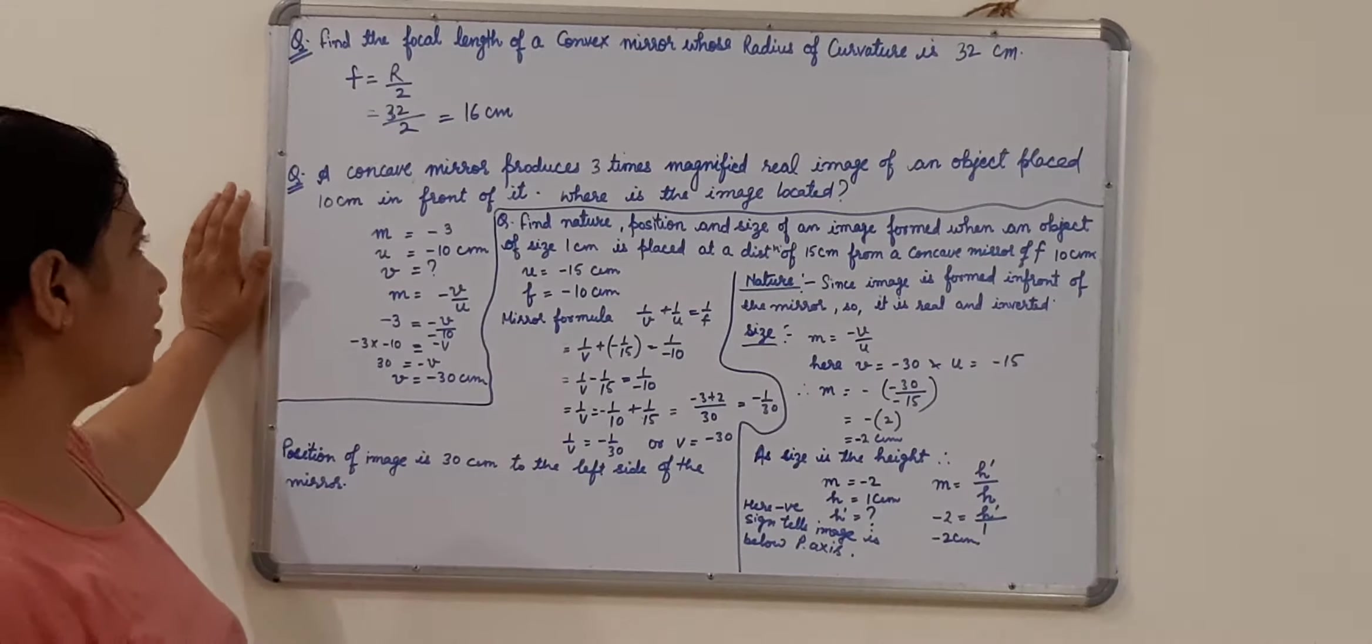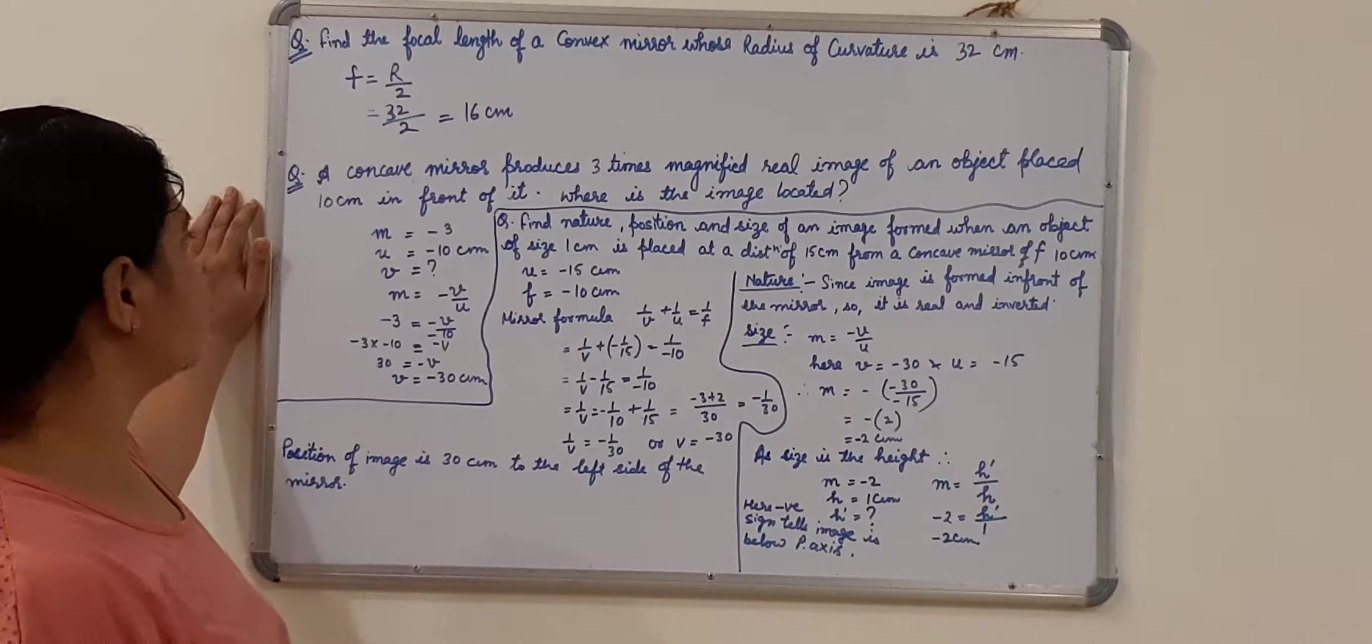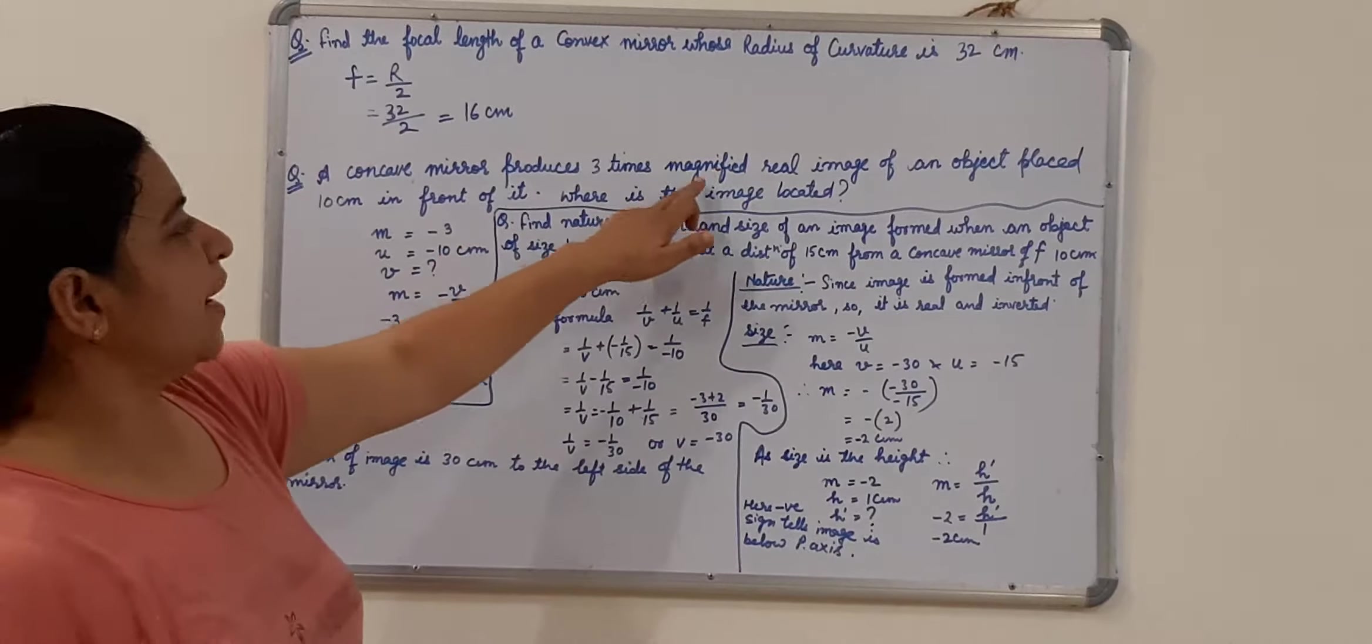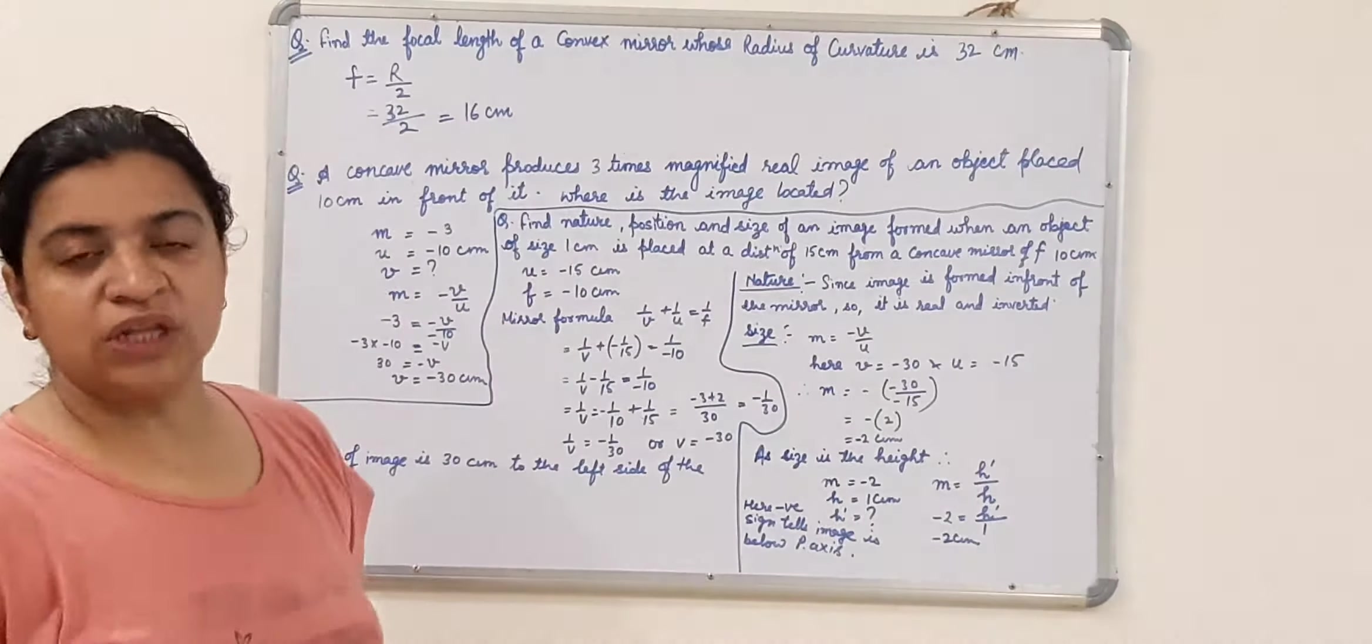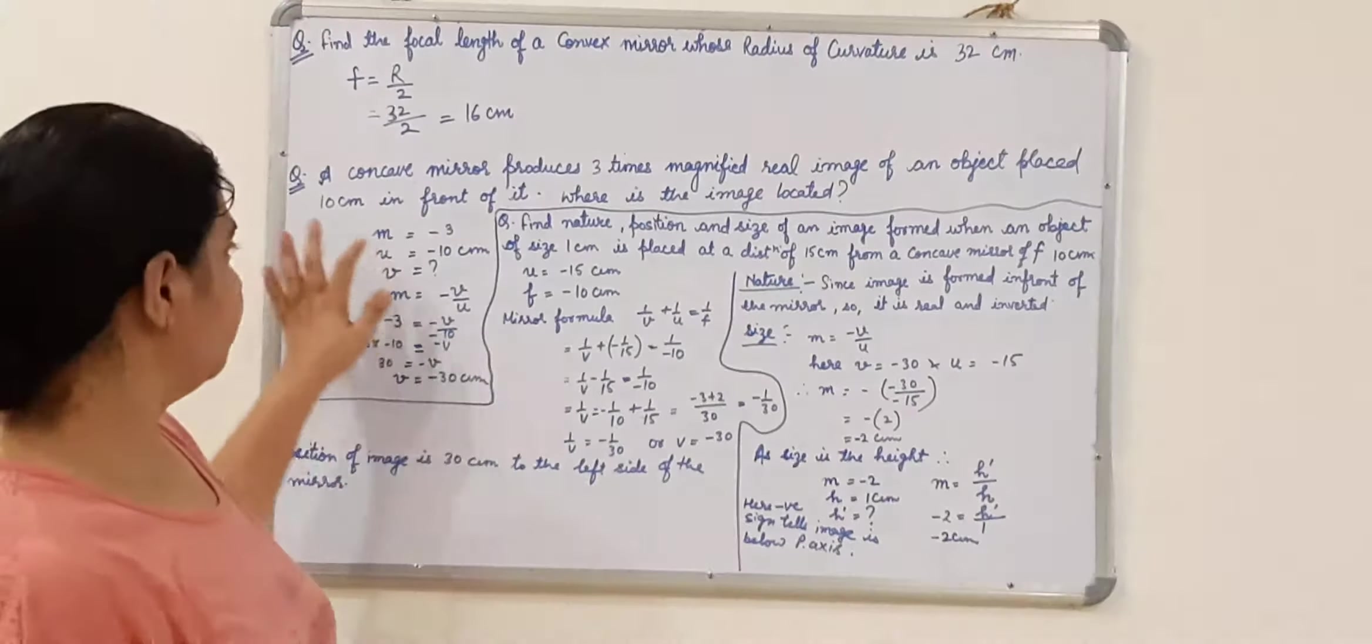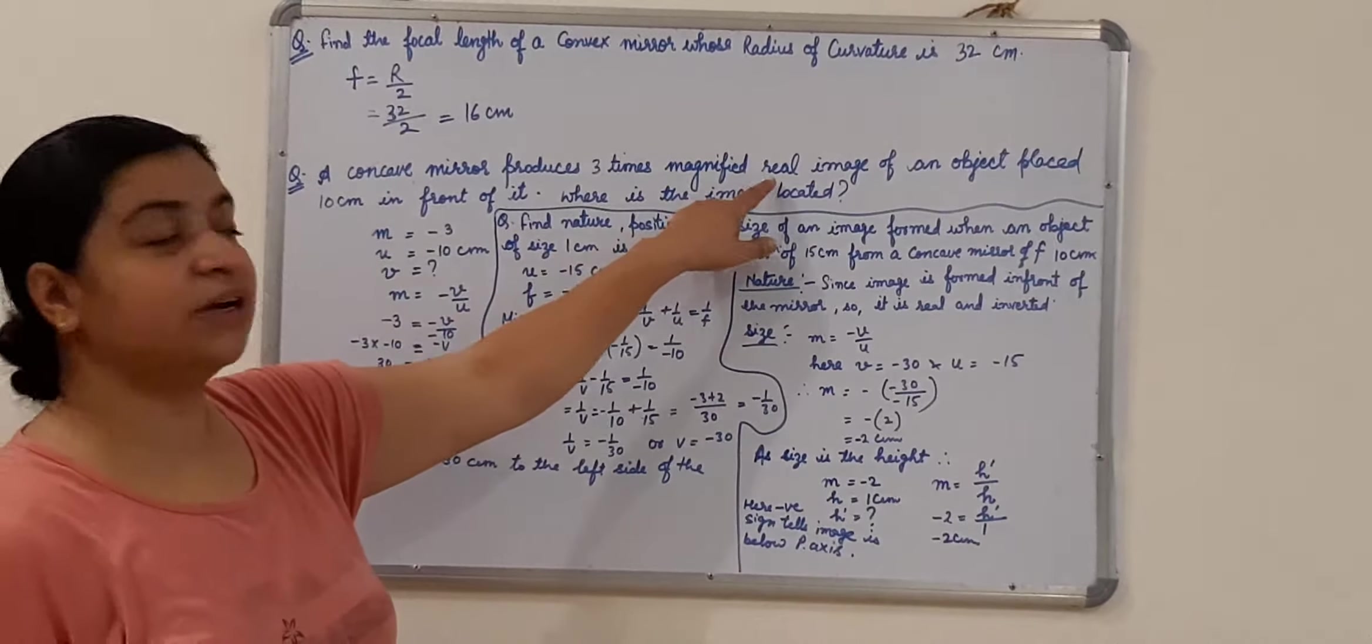Let us switch over to our next numerical. A concave mirror produces 3 times magnified real image of an object placed in front of it. Where is the image located? 3 times magnified, that means it is a magnification. And as it is a real image, we know that in case of real image, magnification will have a negative sign with a numeric value. So if 3 times is M, so magnification will be minus 3 as the image formed is real.